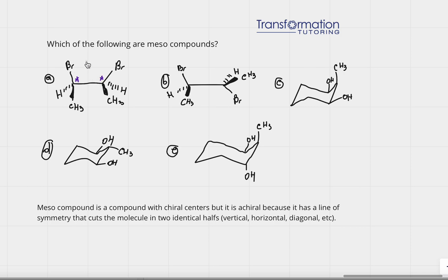Now, is there a line of symmetry? Note that in organic chemistry there are meso compounds without chiral centers, but that's very rare. If we draw a horizontal line through the center of molecule A, we divide it into two identical halves: both bromines on top, both hydrogens on the bottom dash, methyl on the bottom wedge — the left and right halves are identical. So this compound is a meso compound.